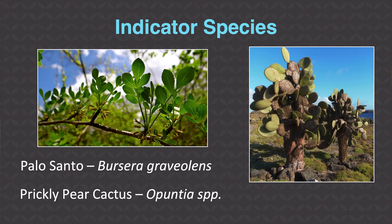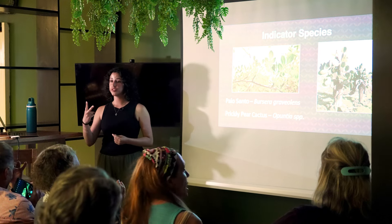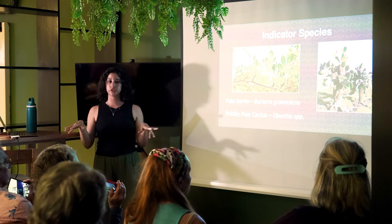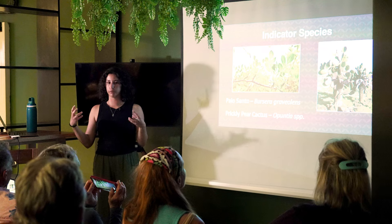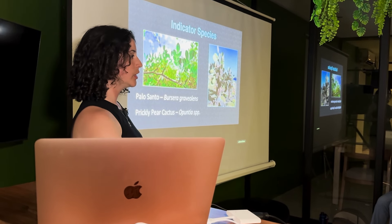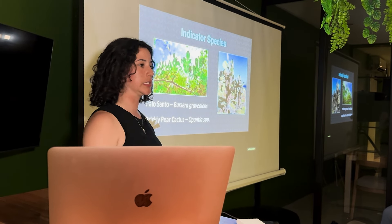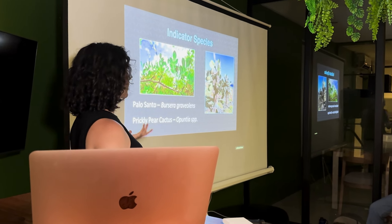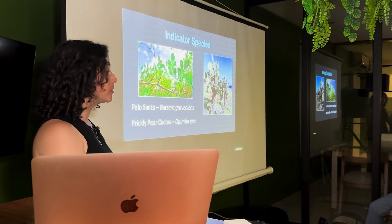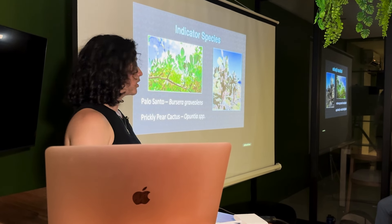The prickly pear cactus, Opuntia, is also an indicator species. Some Opuntia species are only found in the Galapagos Islands. The Opuntia cactus contains two types of roots: shallow roots to get moisture from the upper soil, and one deeper root that digs down to search for water. This is its mechanism against high heat and low precipitation. The Opuntia is also food for many native animals like the tortoise.